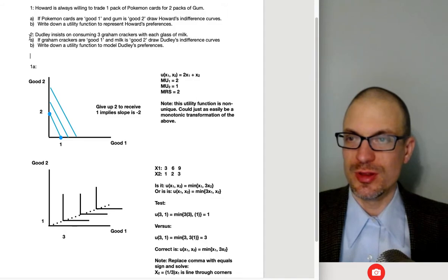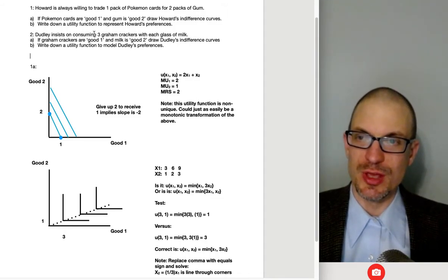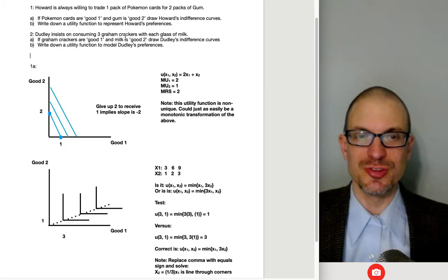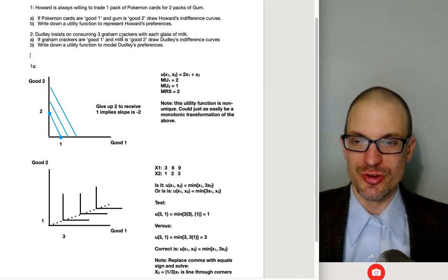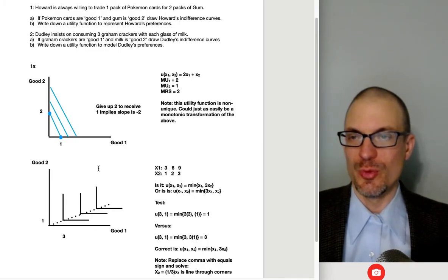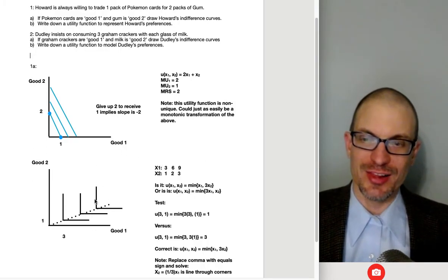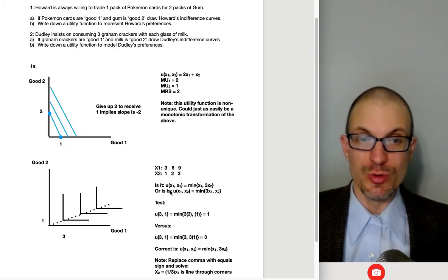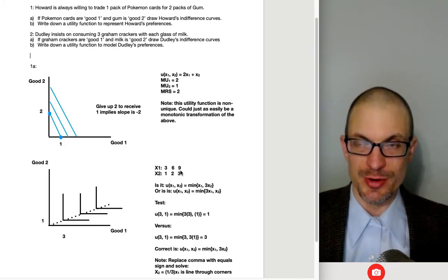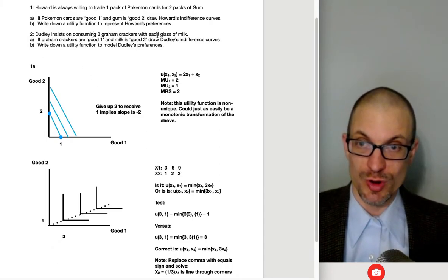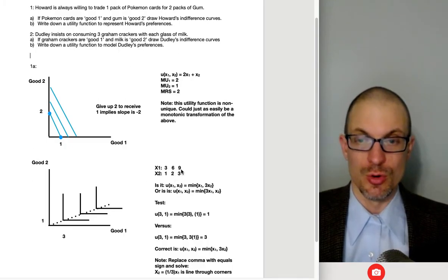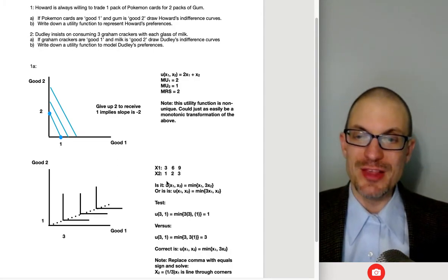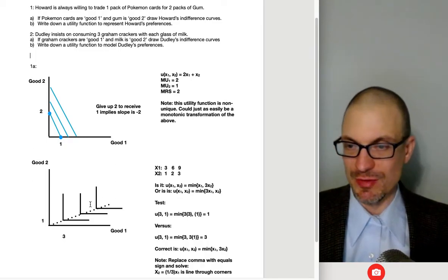Okay, so now let's look at good two, or let's look at exercise two. Dudley insists on consuming three graham crackers with each glass of milk. So insists on consuming three graham crackers with each glass of milk. This implies fixed proportions. So we're expecting these goods are going to be complements. We're going to have these nice like right angle preferences. And the way that I always like thinking about like backing out exactly how to draw the line and everything and how to, I'll explain that in a second, and then how to come up with the utility representation. I always like starting out with a list of all the acceptable bundles.